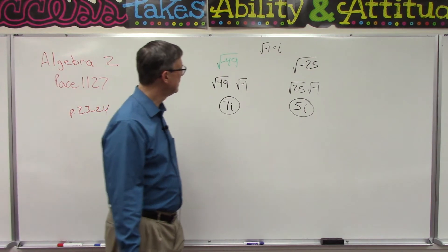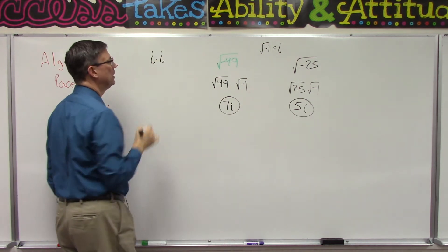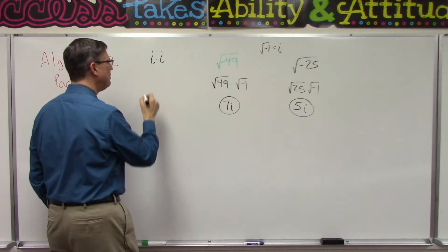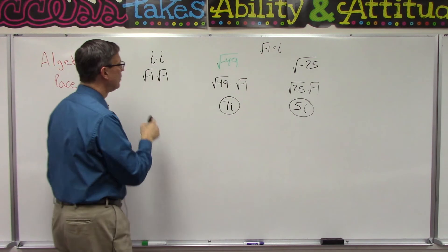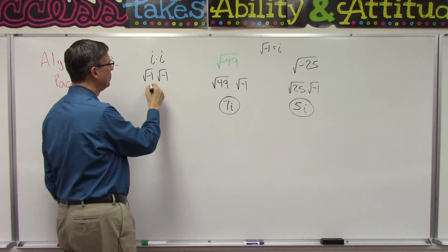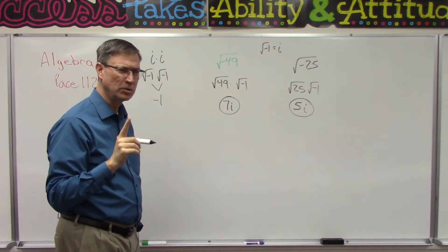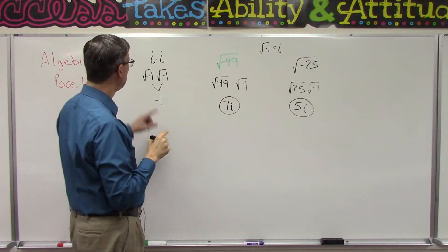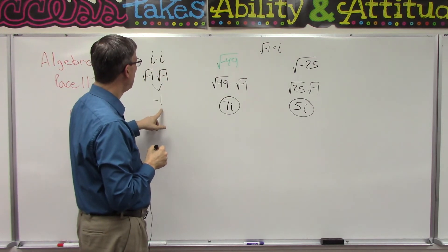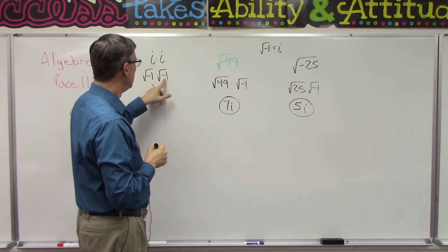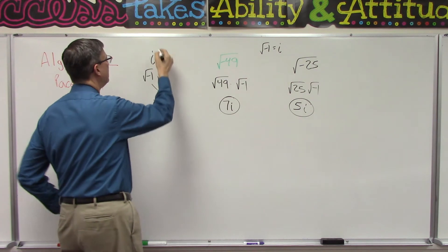In a future lesson, watch this: i times i means the square root of negative 1 times the square root of negative 1. When you have the same thing under the radical being multiplied together, it pops out. So this actually becomes negative 1. Don't play a game in your mind and say 'negative 1 times negative 1 is positive 1, so i squared is positive 1' — no. Whatever is under the radical pops out, so the negative 1 pops out. i times i, which we can write as i squared, equals negative 1.